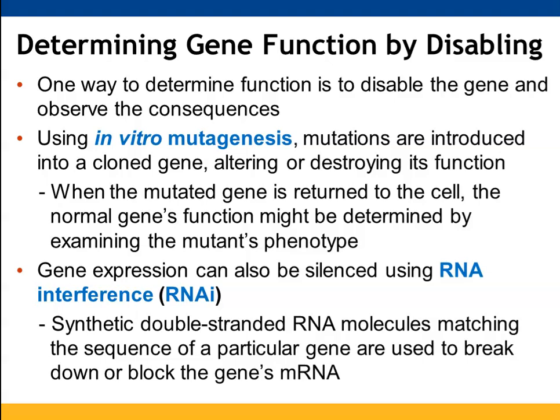Gene function can also be examined through knockouts—disabling a gene to better understand its impact by observing what changes. Mutations are introduced through in vitro mutagenesis to destroy or alter gene function, and the altered gene is reintroduced into the cell to observe how the organism functions. RNA interference (RNAi) can also be used: it binds to the mRNA produced by a gene, preventing translation or breaking down the mRNA altogether.